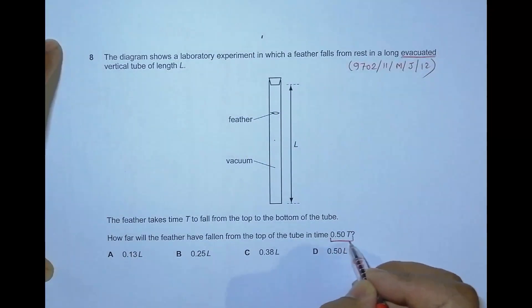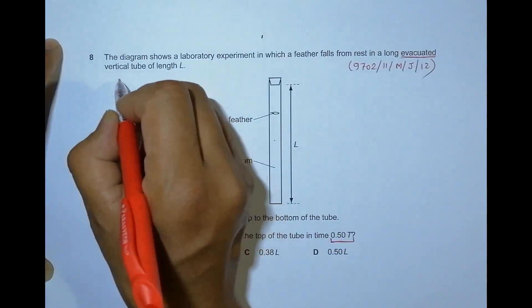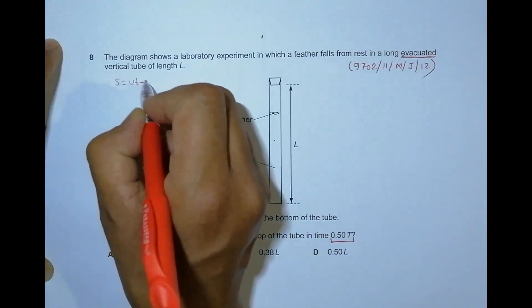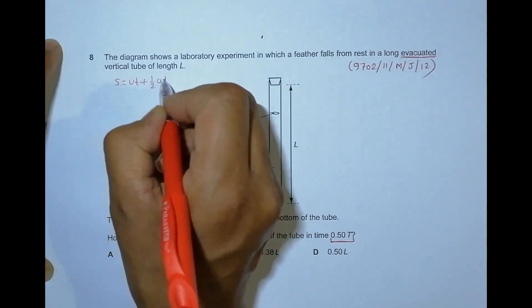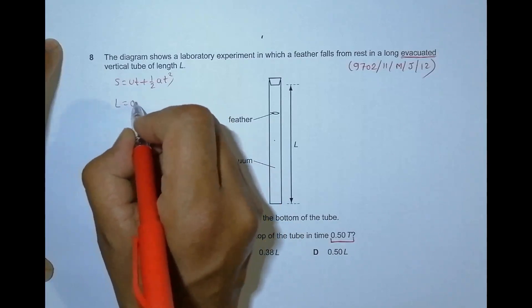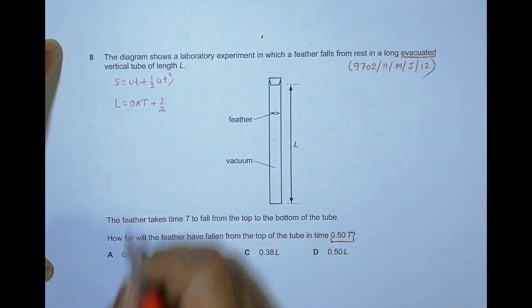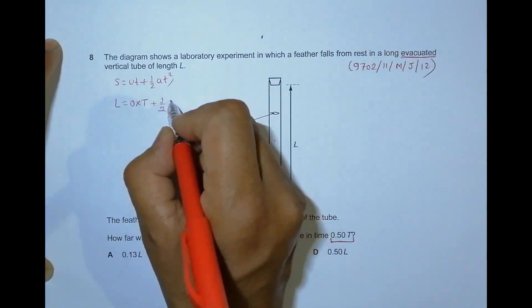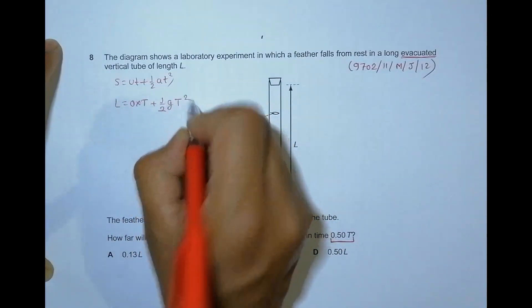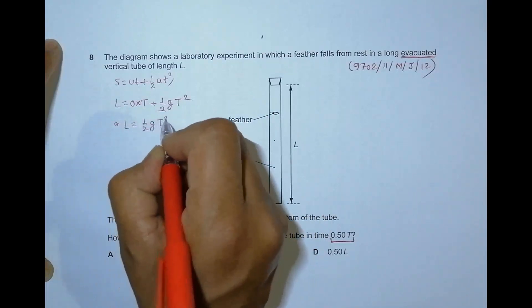So at half the time how far it has fallen. If I apply this equation s = ut + (1/2)at², I must have the displacement here is L = 0 × t + (1/2)gt². Since this is free fall, the acceleration due to gravity should be g, which means that L = (1/2)gt².